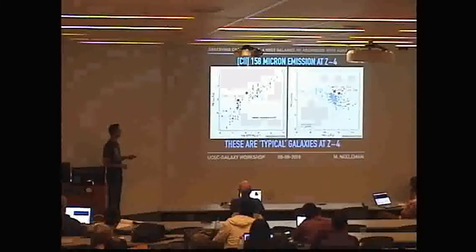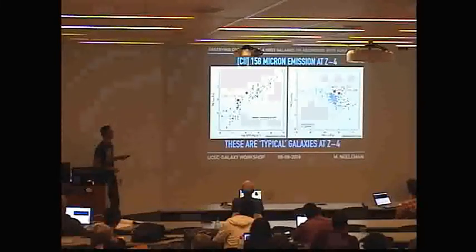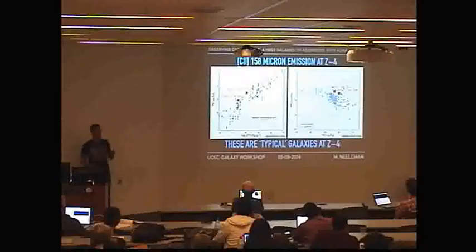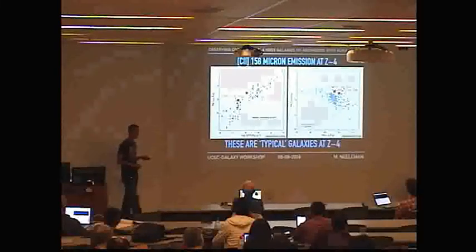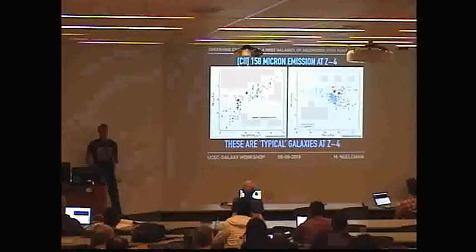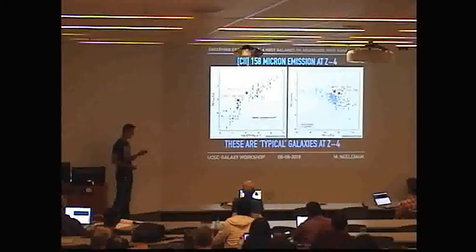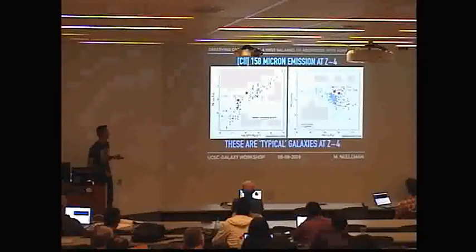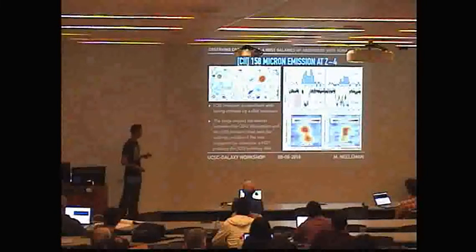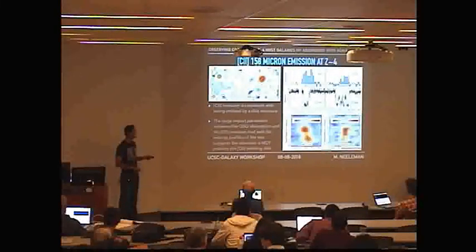Looking at their properties: the C+ luminosity versus star formation rate shows these are quite significant star-forming galaxies — 110 and 20 solar masses per year derived from the dust continuum. On the far-infrared luminosity versus C+/FIR ratio plot, these things fall exactly on the relationship defined by local high-redshift galaxies. We didn't find anything weird, which is good — we just wanted to find them. They fit the expected relationships from luminosity-based samples.